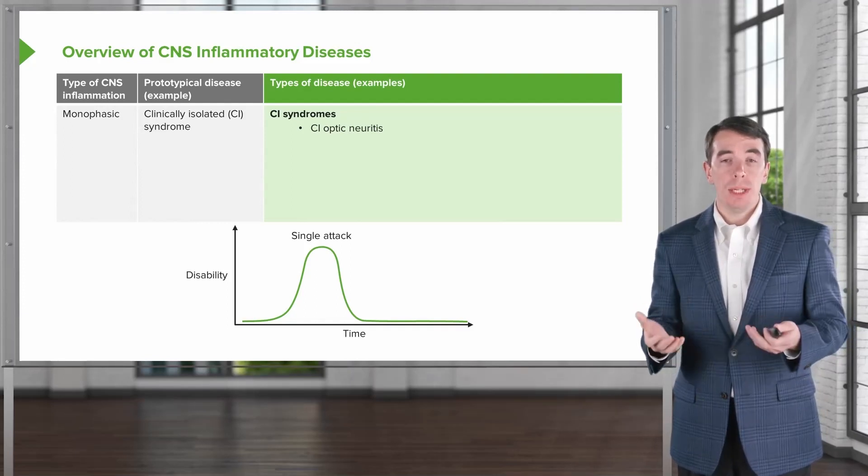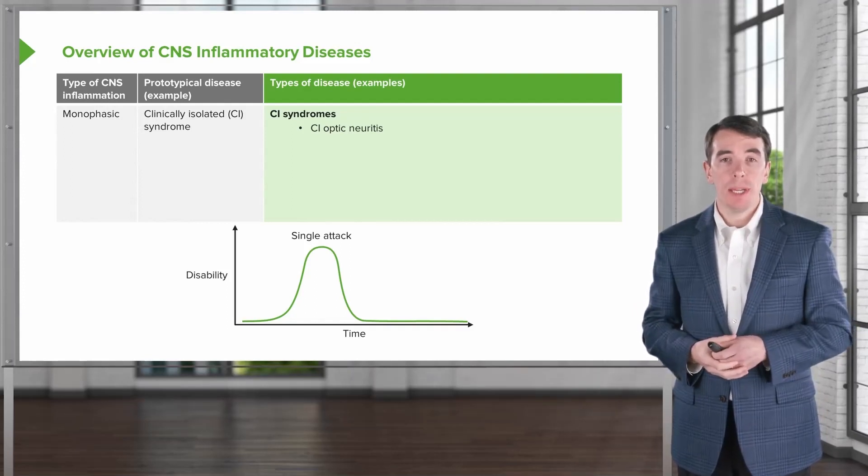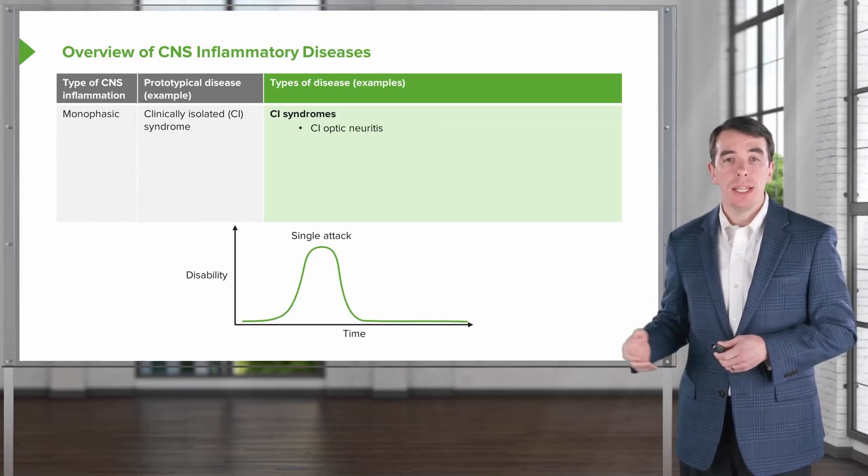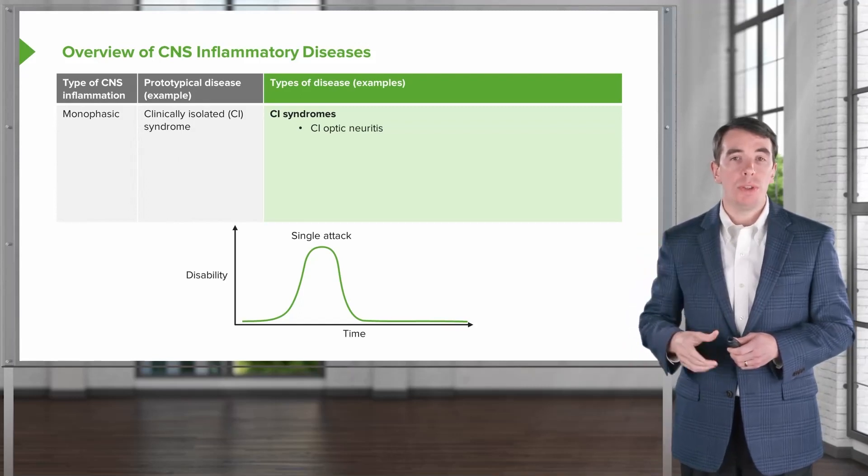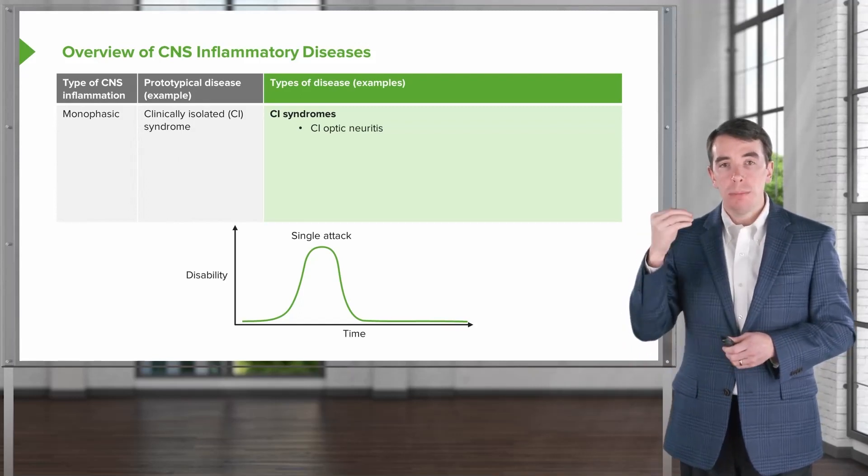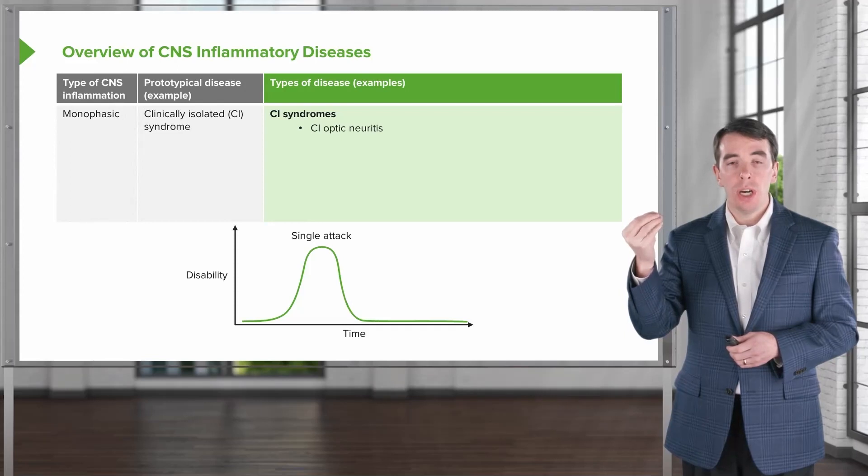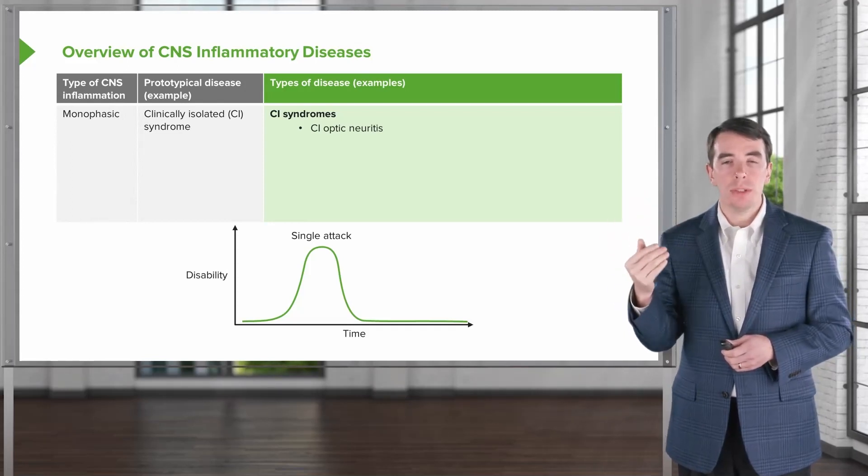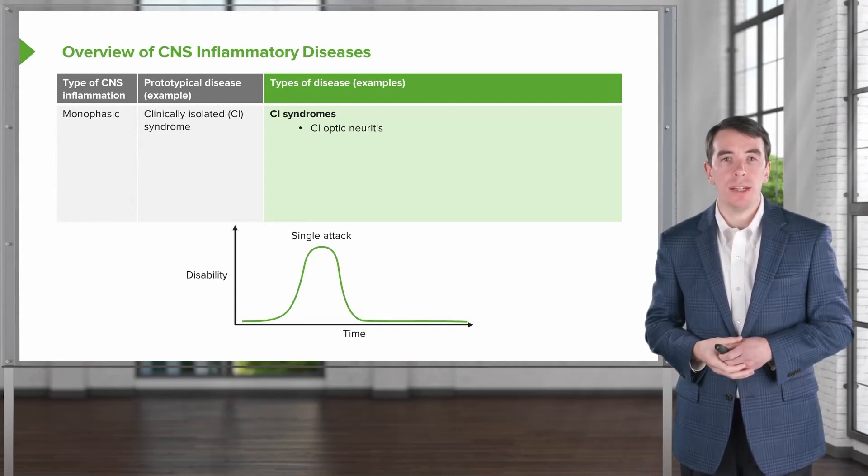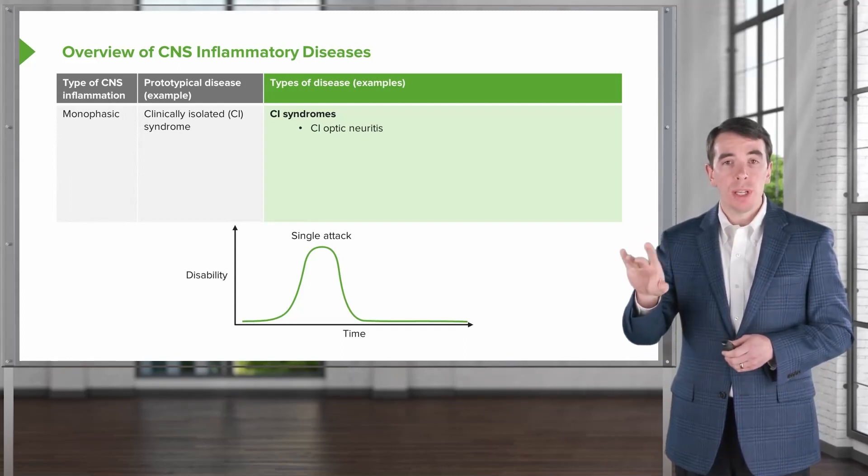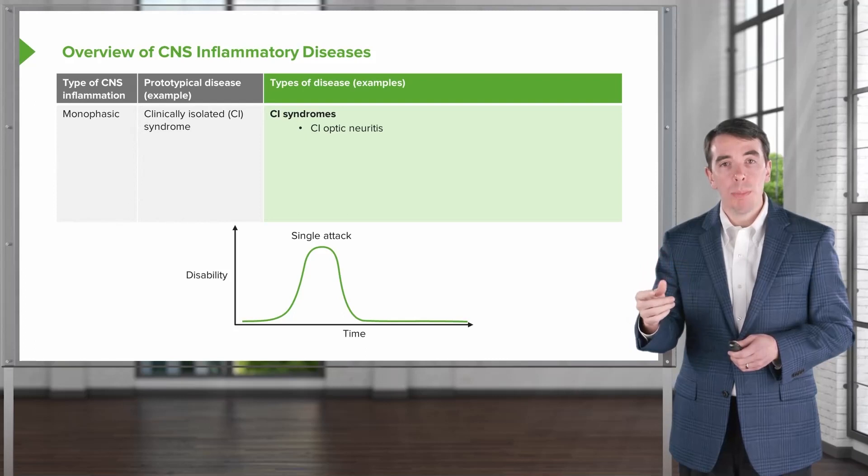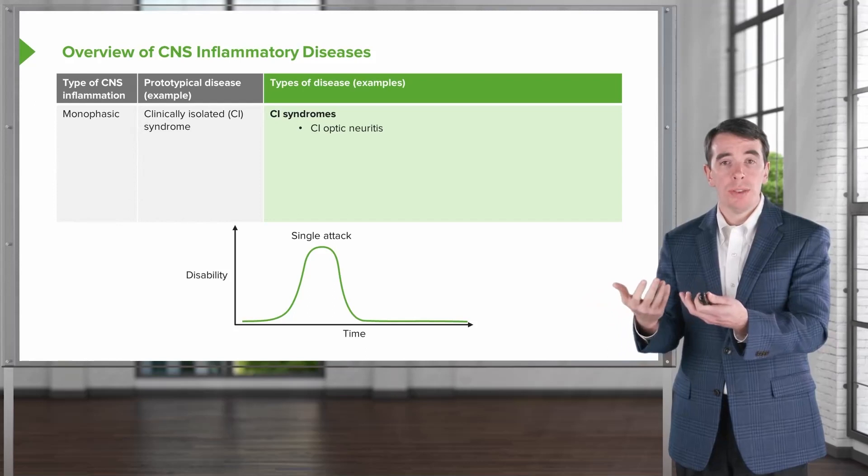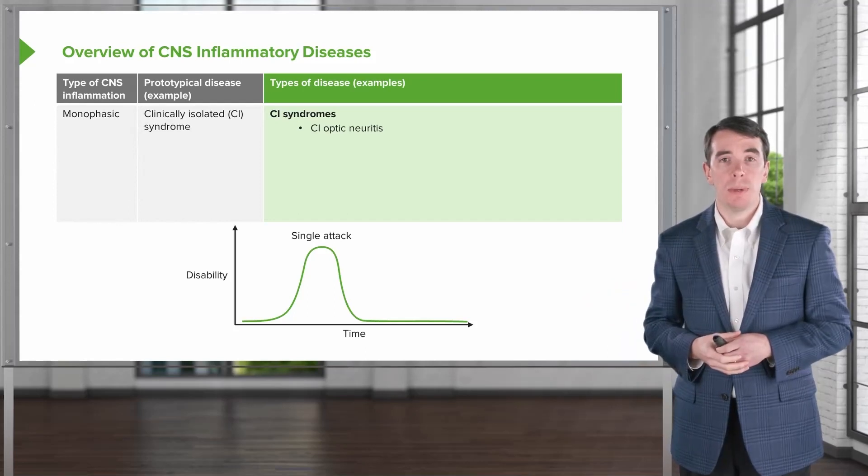We call these the clinically isolated syndrome because there is an isolated syndrome that doesn't recur. The syndrome can be categorized based on the area of the nervous system that's involved. So clinically isolated optic neuritis is an optic neuritis that occurs with one attack. The patients develop new vision changes or vision loss, often with red or color desaturation, and pain with eye movements. Again, the optic nerves are an extension of the brain and they're connected to that same spinal fluid space.